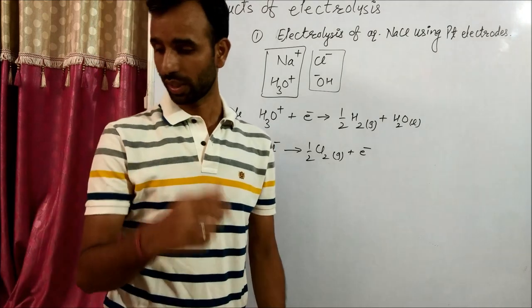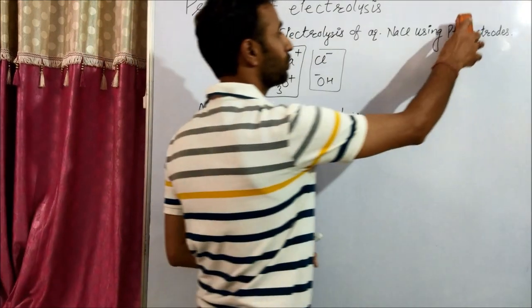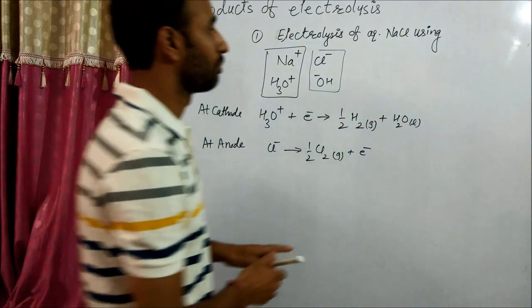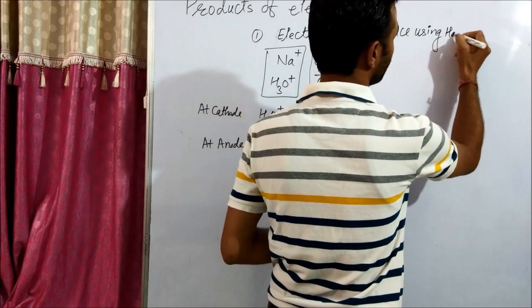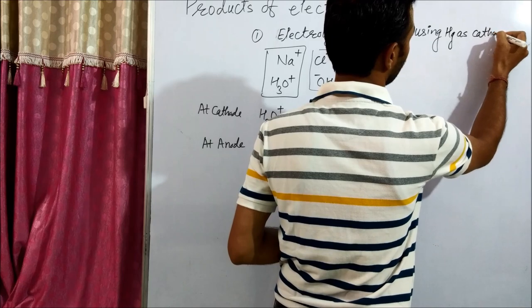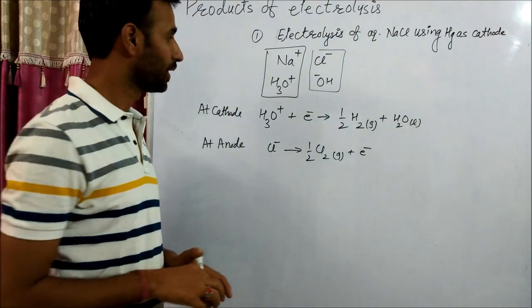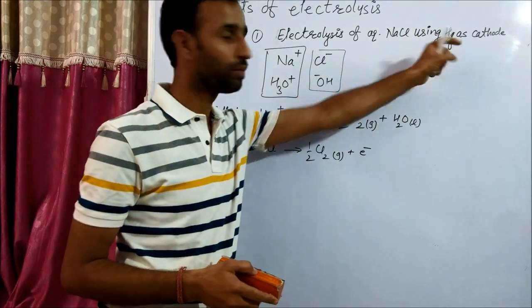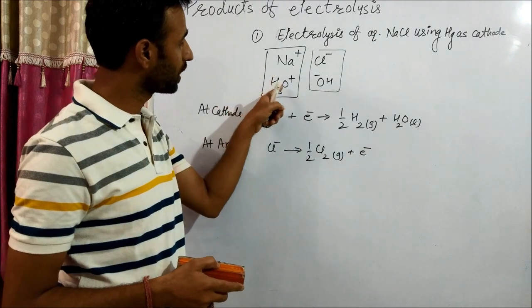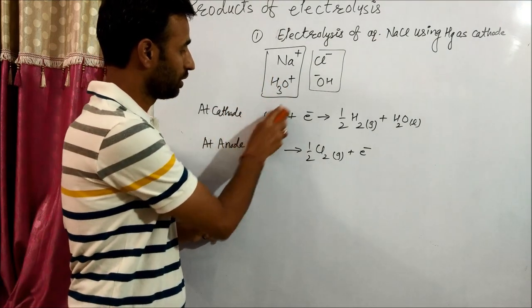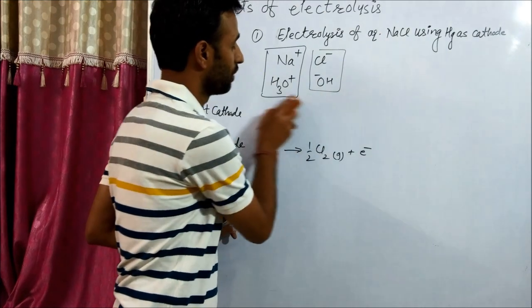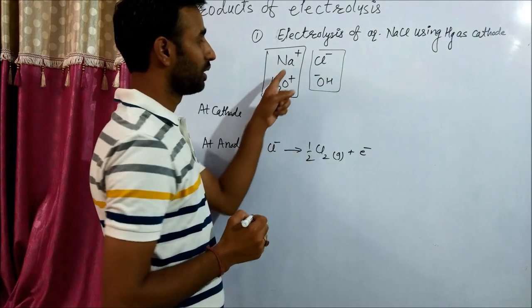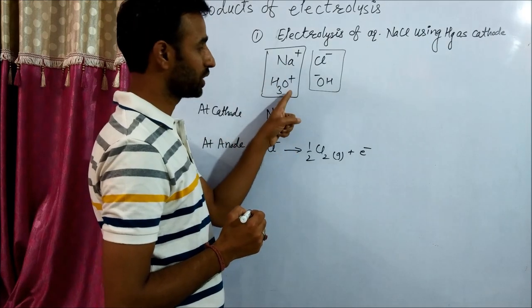Now come to the next part. If we are using mercury as cathode, then what would happen? So see the change. Here in this case when we use platinum electrode, then H3O+ has lesser discharge potential. But when we use mercury as cathode, then sodium positive has lower discharge potential than H3O+.